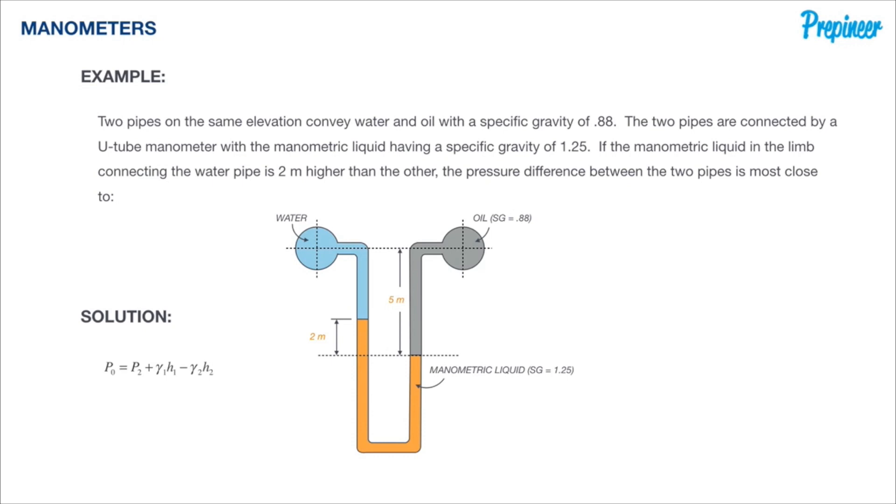Now the general formula is set up using just two working fluids whereas in our problem we have three: we have water which has a specific gravity of 9810 newtons per cubic meter, we have an undefined manometric liquid with a specific gravity of 1.25, and we have oil with a specific gravity of 0.88. With three different working fluids we will be making three adjustments to our pressure as we make our way from one pipe to the other.